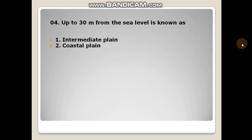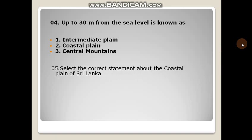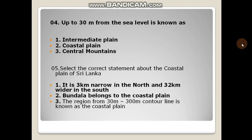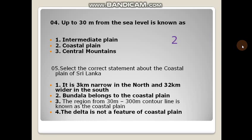Up to 30 metres from the sea level is known as — intermediate plain, coastal plain, central mountains, or Pippton? Select the correct statement about the coastal plain of Sri Lanka: it is 3 km narrow in the north and 32 km wide in the south; Bundala belongs to the coastal plain; the region from 30 metres to 300 metres contour line is known as the coastal plain; or the delta is not a feature of the coastal plain.